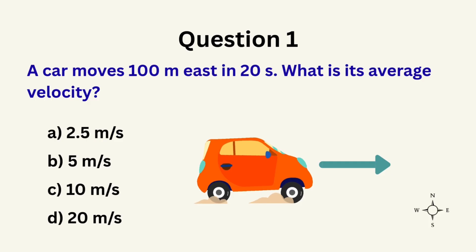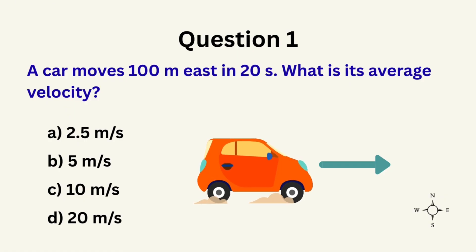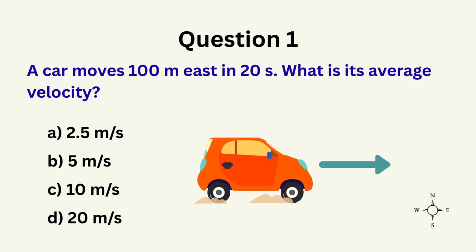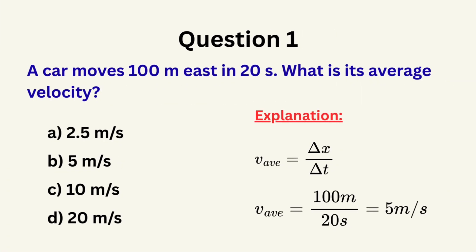Question 1: A car moves 100 meters east in 20 seconds. What is the average velocity? A. 2.5 meters per second, B. 5 meters per second, C. 10 meters per second, D. 20 meters per second. The correct answer is B: 5 meters per second.